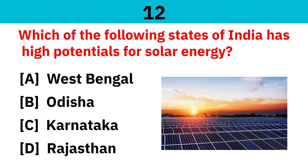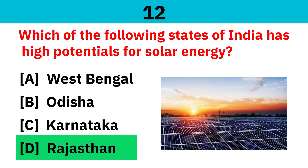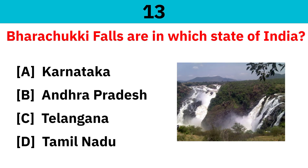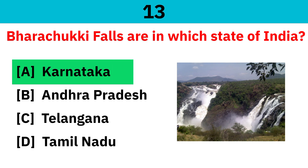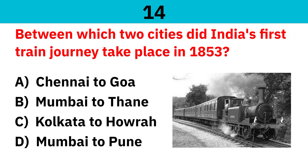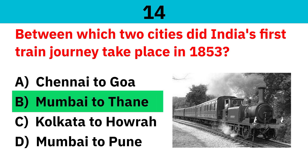Which of the following states of India has high potential for solar energy? Correct answer is Rajasthan. Bharchukki Falls are in which state of India? Correct answer is Karnataka. Between which two cities did India's first train journey take place in 1853? Correct answer is Mumbai to Thane.